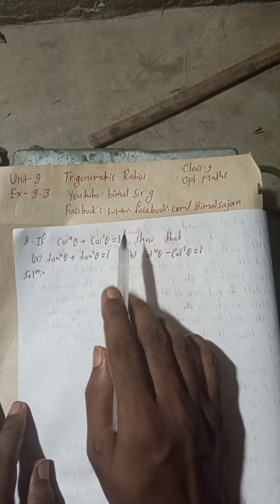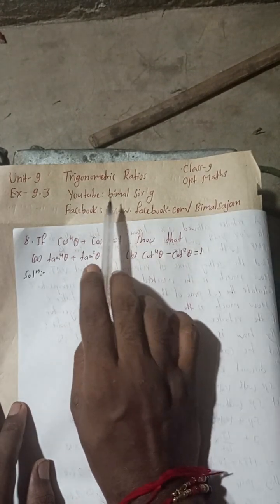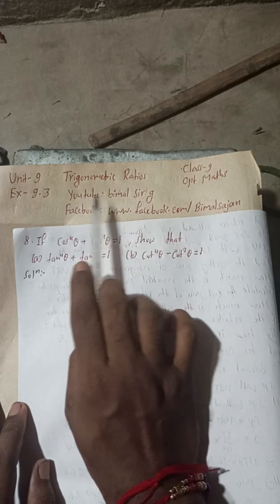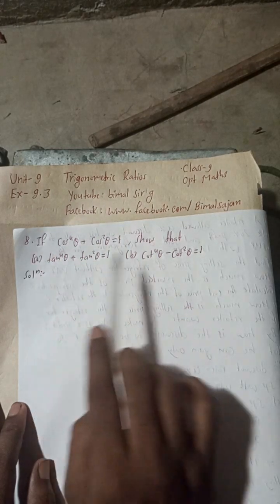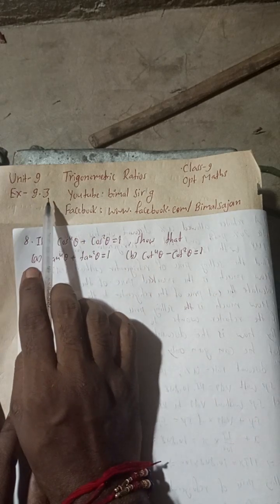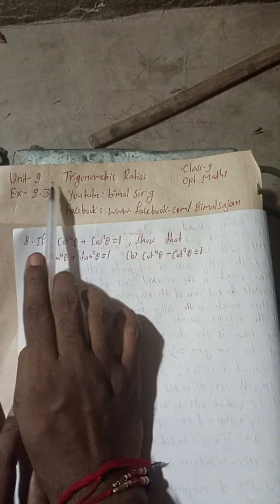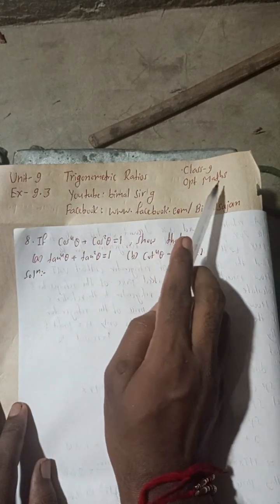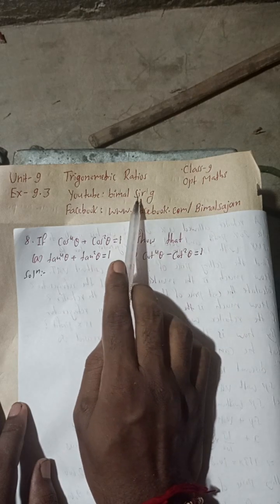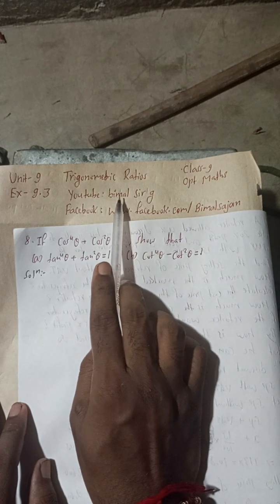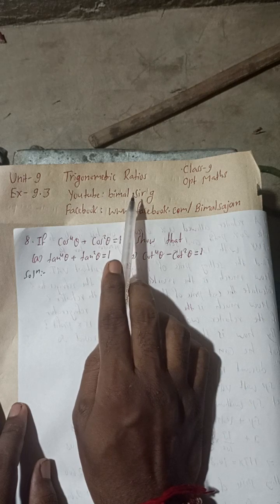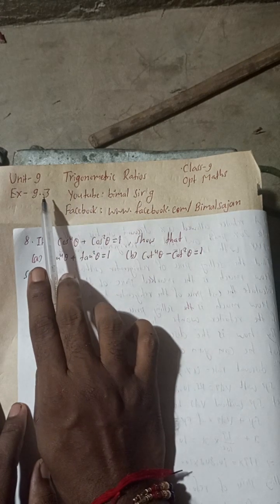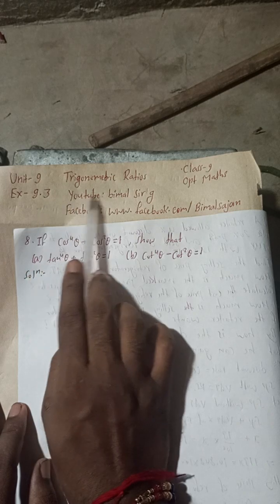Radhe Radhe, Jaya Sri Krishna. Class 9 and 10 students, welcome back to Bimal Sarji YouTube channel. This is question number 8a and 8b, Exercise 9.3, Unit 9, Trigonometric Ratios, Class 9 Optional Maths. If you check the playlist of Bimal Sarji YouTube channel, you'll get most of your Class 9 and 10 optional maths, compulsory maths, science, reasoning parts and many more.